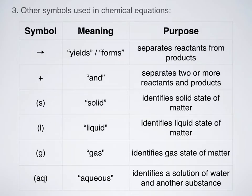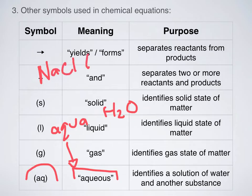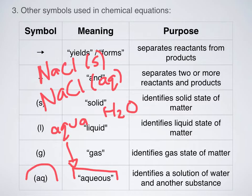Last but not least is the state symbol (aq), which means aqueous — and this is the one people often get confused about. It means it's a solution of water and another substance. Think of 'aqua,' meaning water. For example, NaCl(s) is table salt you'd find on your kitchen table, but NaCl(aq) means aqueous sodium chloride — that's salt water, a solution of salt and water mixed together. Aqueous is used a lot because we often dissolve substances in water before using them.